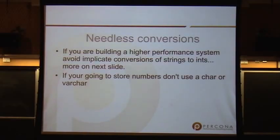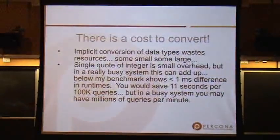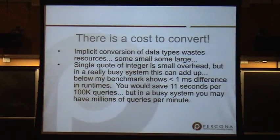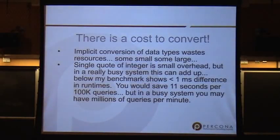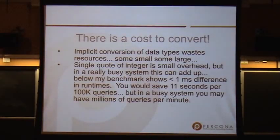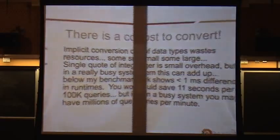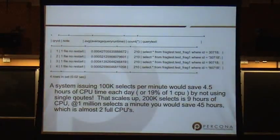Avoid implicit conversions as well. If you're going to store numbers, store them as numbers and not as VARCHAR or character fields. When you have implicit conversions — like single-quoting your integers in a web application — it seems relatively small, but there is a cost. Around 10 to 20 percent overhead on really simple things.